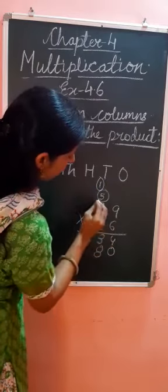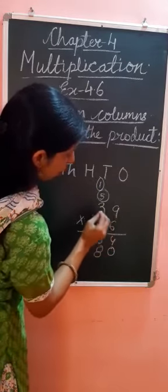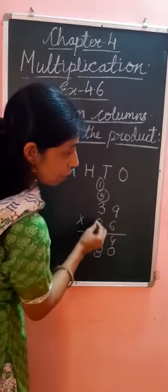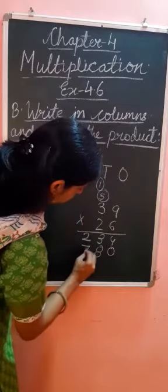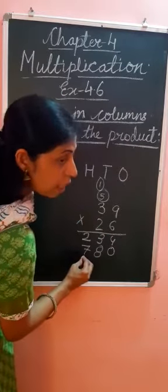Now, we multiply tens place number. So 2 times 3, we get 6. 6 plus 1 equals 7. So we write this 7 in hundreds place.